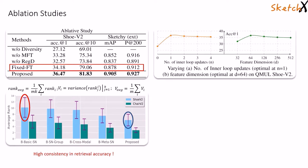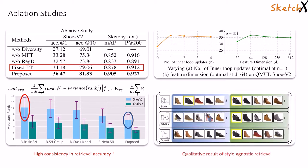For our framework, we get best results with only one inner-loop update and with a feature dimension size of 64. Our model retrieves the same target photo, irrespective of the differently styled sketches of the same object, unlike the baseline.